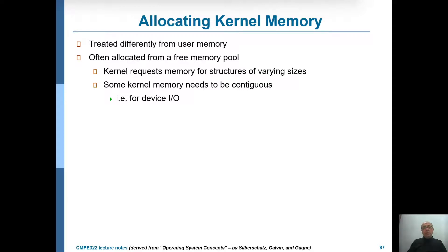We have discussed how we can allocate memory for user processes. Now let's also have a look at how we can allocate memory for the kernel itself. You have to treat the kernel in a different way because the kernel has to maintain data structures for different processes, buffers, and everything, and these data structures are typically of varying sizes.